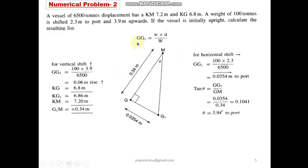So again, if you take the formulae, the GG_1 is w into d by W. So let us apply this formulae in the vertical and horizontal movement directions separately. So if I take only the vertical shift, we have a mass which is 100 tons, 3.9 meters in the vertical direction upwards. So GG_1 is 100 into 3.9 by the displacement, which is given as 6500, equals 0.06 meters rise. The KG is 6.8, and the shifting in center of gravity, so the new GG_1 is 6.86. We have added these two values. Now KM is 7.2 meters. So your G_1M will be 0.34 meters. This will be your new GM after the mass has moved on the vessel.